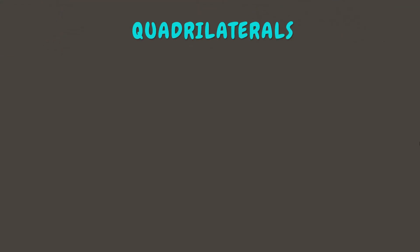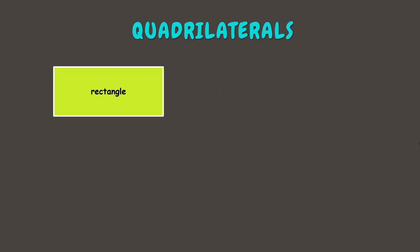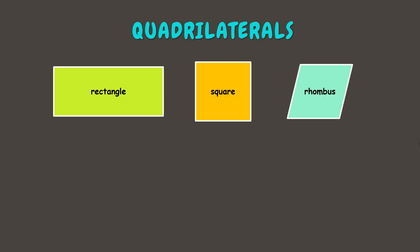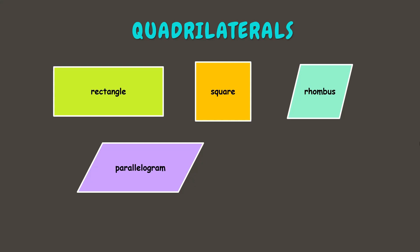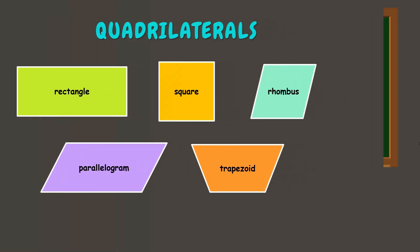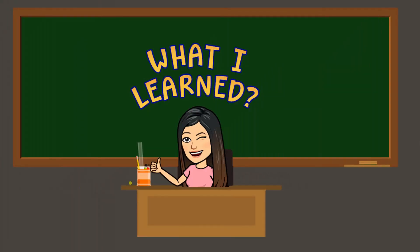Now we have learned the different kinds of quadrilaterals, which are rectangle, square, rhombus, parallelogram, and trapezoid. Great job students — you made it this far! Here are the things that you learned today.